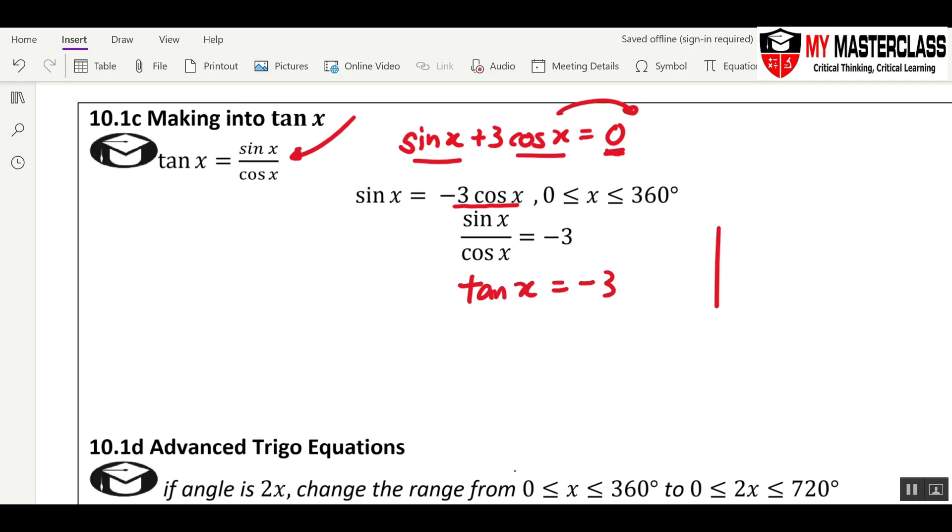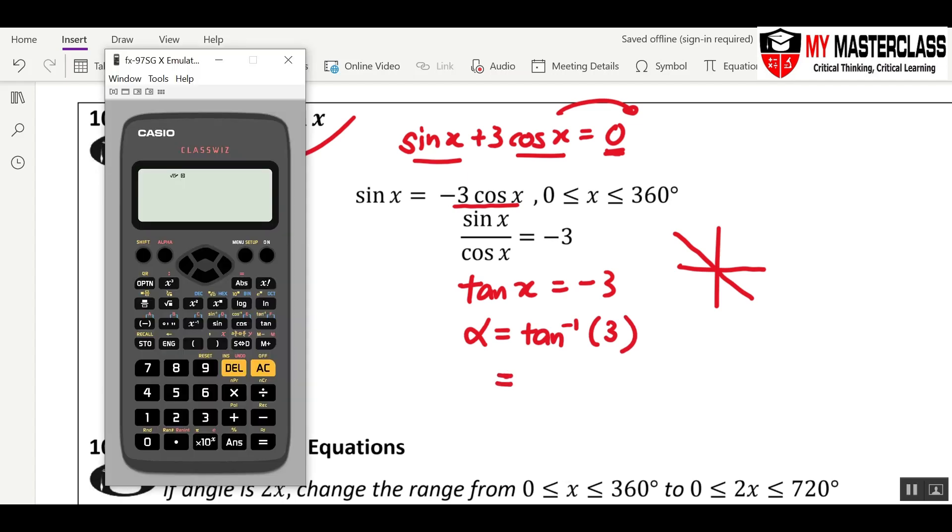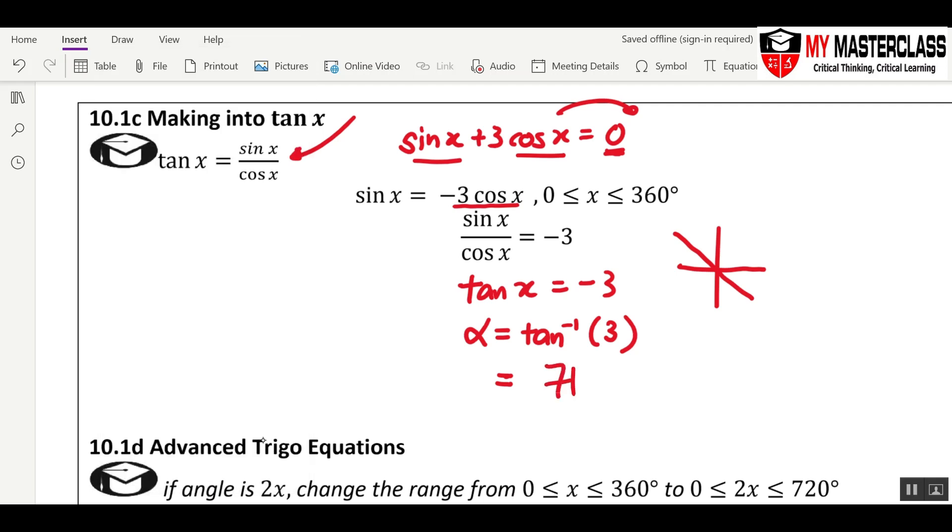So once you are here, let's choose the correct quadrant. Tangent is negative, so second quadrant and third quadrant. Basic angle equals inverse tangent 3. Remember never to inverse a negative number because we are looking for the basic angle. Now, you take out your calculator, you key in tangent inverse 3, and you have 71.6. That's the basic angle. x is in the second quadrant, so 180 minus 71.6, and 360 minus 71.6, and you will have your two answers.